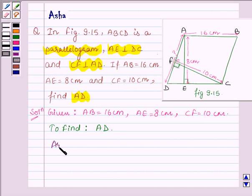Area of a parallelogram is equal to the product of base and the corresponding altitude.